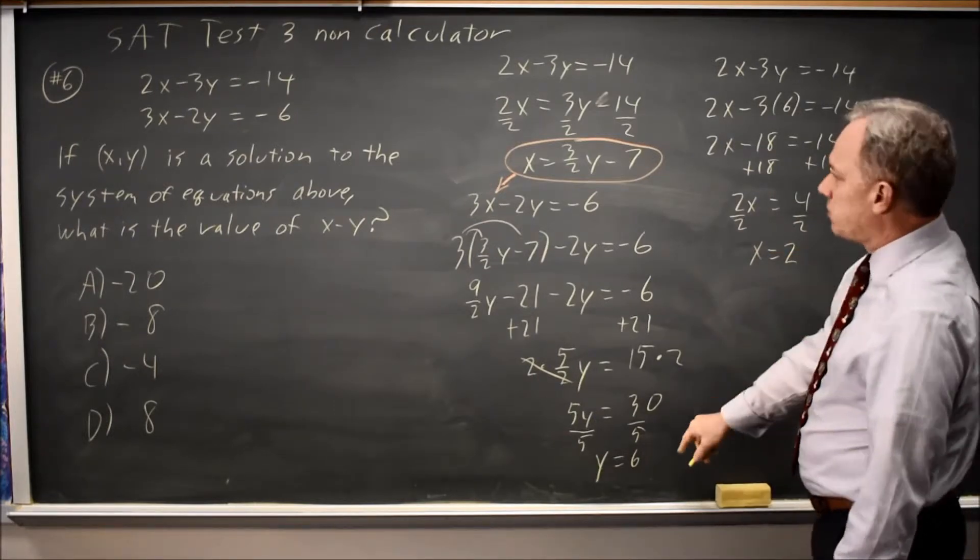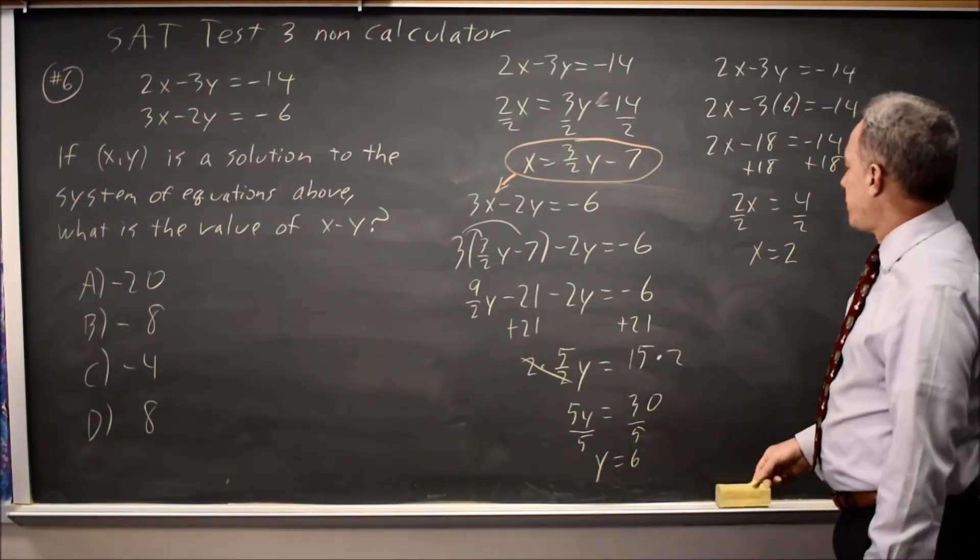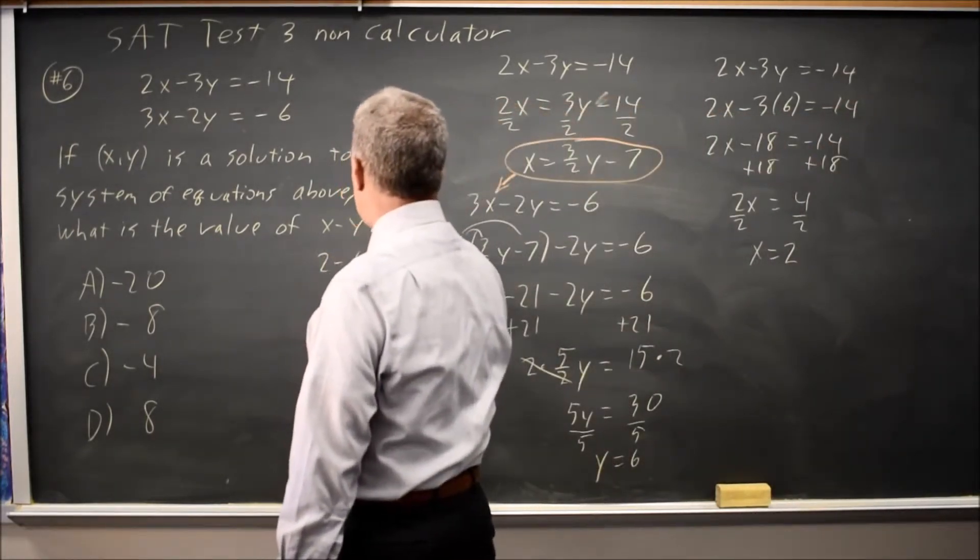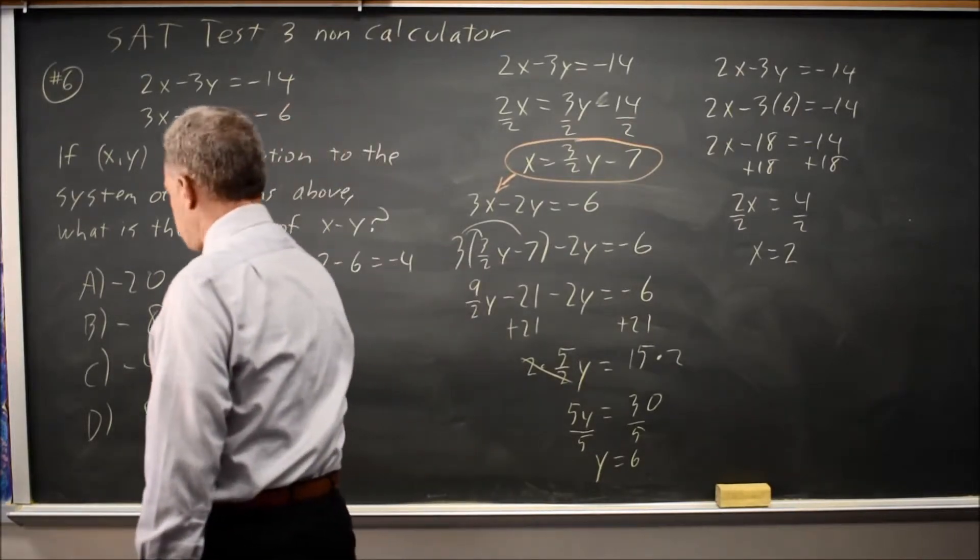So x equals 2, y equals 6. They ask for x minus y, 2 minus 6 equals negative 4. That is choice C.